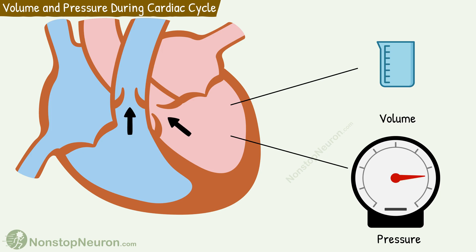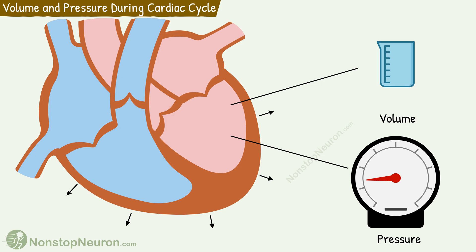Then semilunar valves close and isovolumetric relaxation starts. During this, the volume remains the same, but due to continued relaxation of the ventricles, the pressure shows a significant fall.